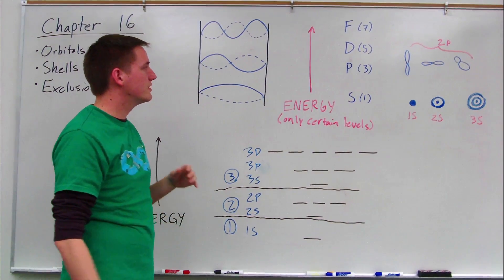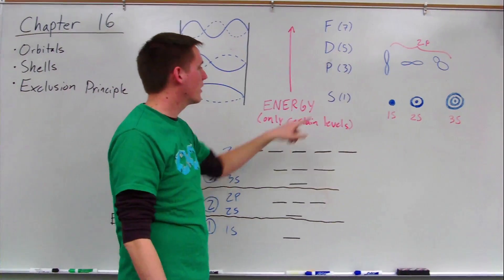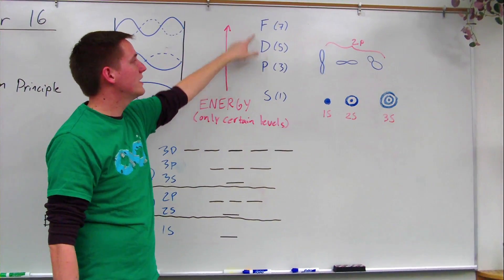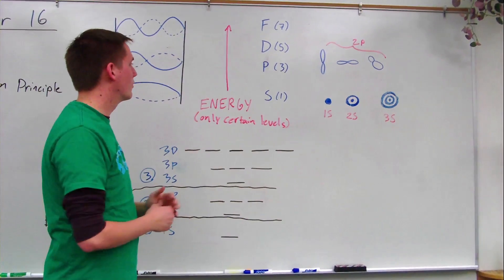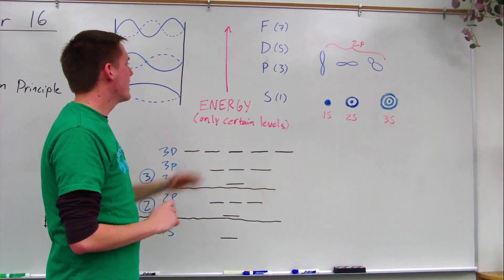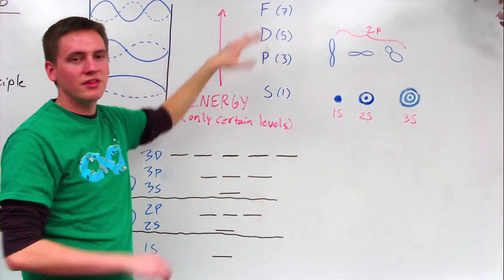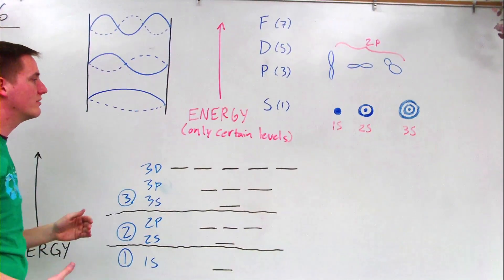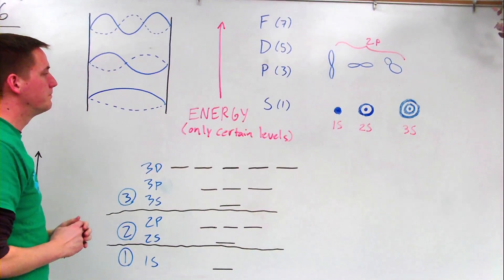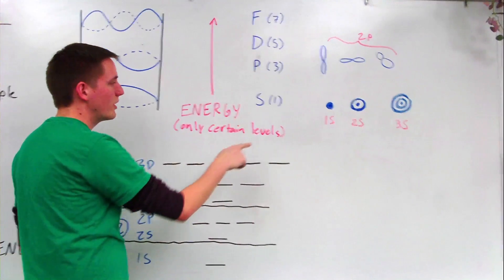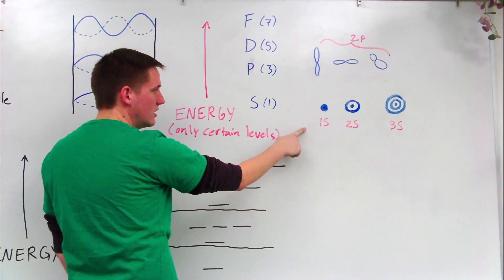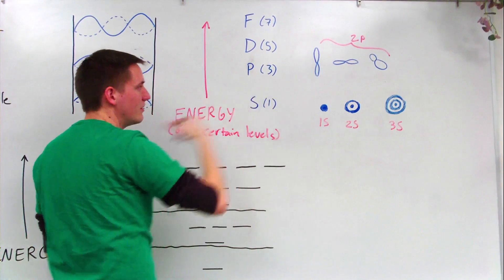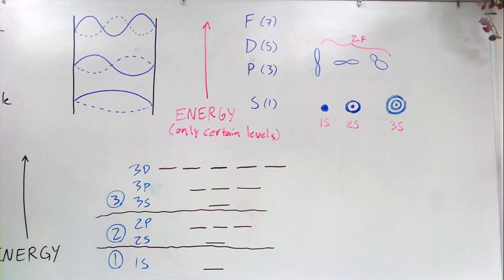So we have different types of orbitals. There are s orbitals, which are lowest in energy, p orbitals, d and f, just an increasing order of energy. And the higher we go in energy, the more complex the shapes of the orbitals get, just like we did here with the standing waves. For example, s waves are generally spherical, and p waves kind of look like dumbbells.